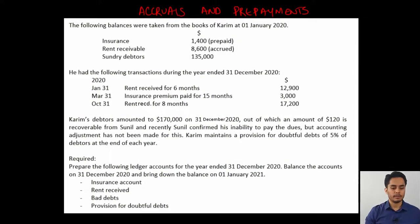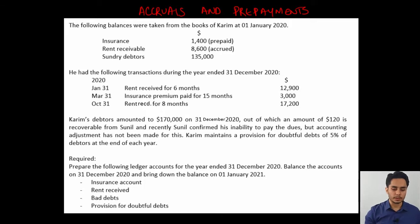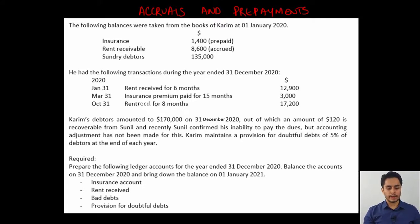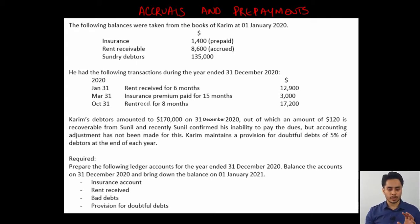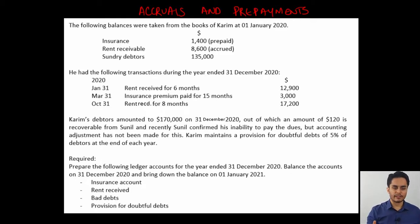The question is: the following balances were taken from the books of Karim on 1st January 2020. Opening balances are given for insurance, rent received, and sundry debtors. Then transactions during the year are given — for rent received there are two transactions, and insurance premium paid is one transaction. At the end of the year, debtors balances are given as $170,000. Some irrecoverable debts are also given, and provision for doubtful debts information is given at 5%. The question wants us to prepare four accounts: insurance, rent received, bad debts, and provision for doubtful debts.